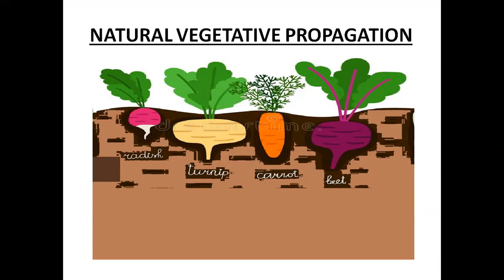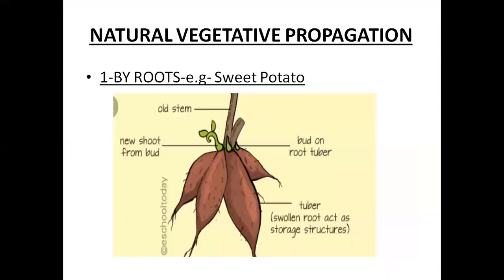The first type is natural reproduction by roots. Some plants like sweet potato, carrot, radish, and turnip store food in their roots — and you may be using them in your salad. Roots of these plants develop buds that can grow into new plants, as you can see in this picture.